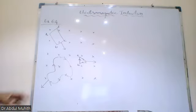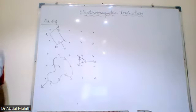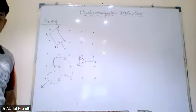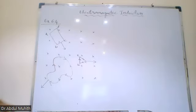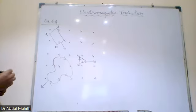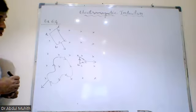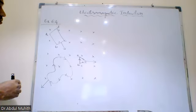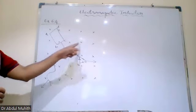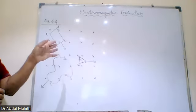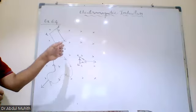Now, in the first one we will see the direction — how the direction is formed. The first one: the current is going in here. The magnetic field is going into the board — cross space — the magnetic field is going into the board.